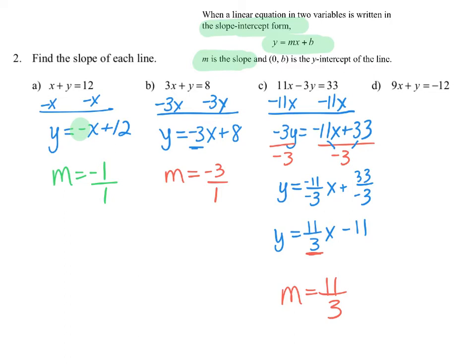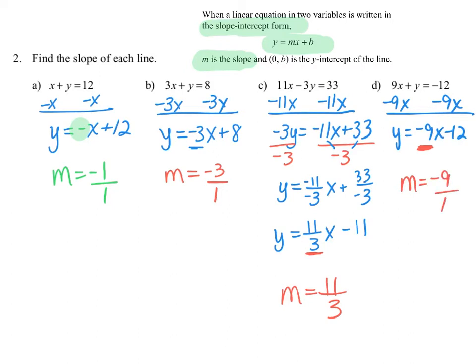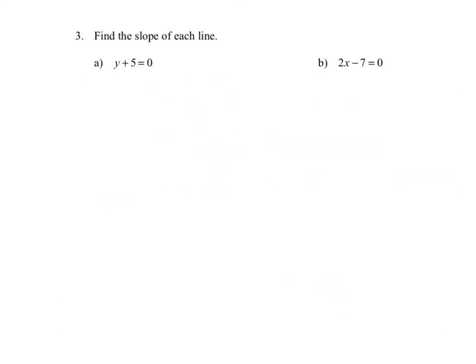For part d, 9x + y = −12, we subtract 9x from both sides to get y = −9x − 12. The coefficient of the x term is the slope, so the slope of that line is negative 9, or we can write it as negative 9 over 1.